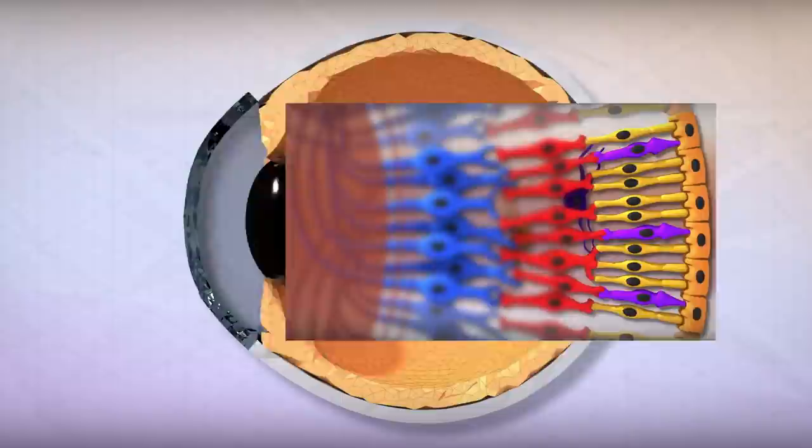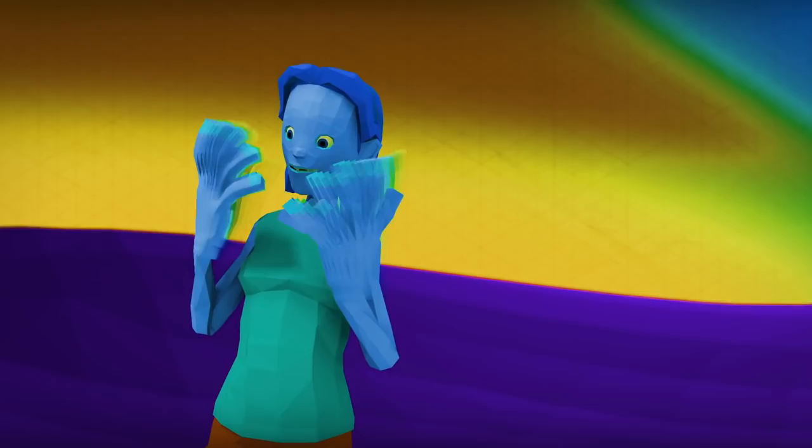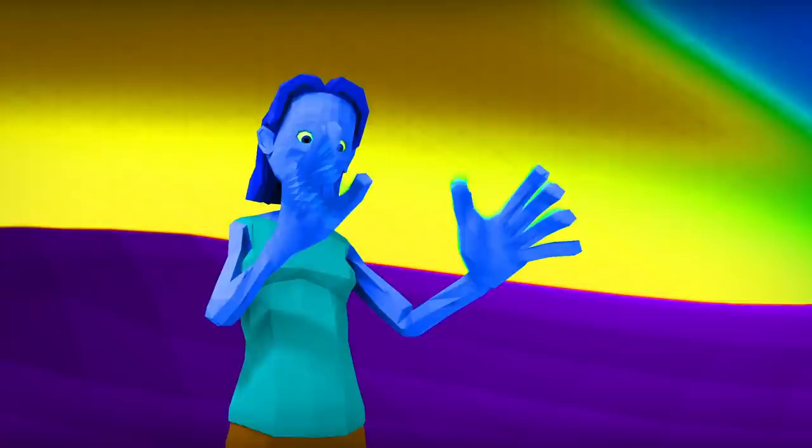Inside our retinas are special receptors called rods and cones. The rods measure brightness, so we know how much light there is. The cones are in charge of what color of light we see, because different cones are sensitive to different energies of light.